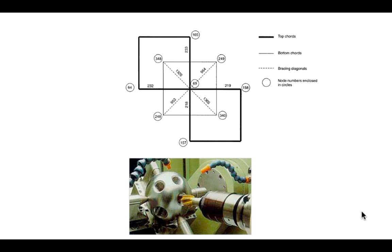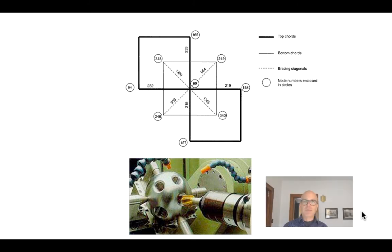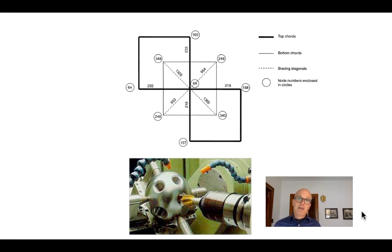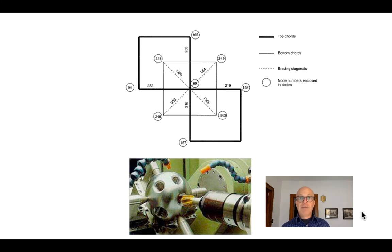One of the downsides of space frames has always been not just the organizational challenge of doing the math to figure out the actual geometry, but getting gusset plates or Unistrut connectors or screw-in connectors to exactly the right geometry so that when everything goes together on site, everything fits. That's gotten much, much easier with building information modeling and computer-aided manufacture. When we can digitally fabricate these, we get not only reliable, precise shapes and dimensions, but we can keep track of all the complicated geometry much more easily. We can do more complicated shapes in space frames today than even 10 or 15 years ago.